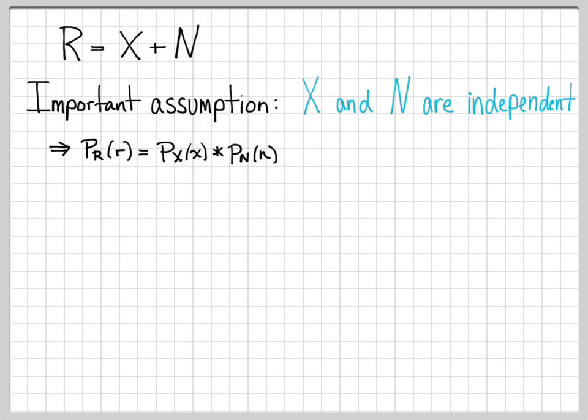This is a general result: anytime you add independent random variables, the resulting density function of the sum is just the convolution of their individual density functions. So we can compute the density function of R very easily by evaluating this convolution.